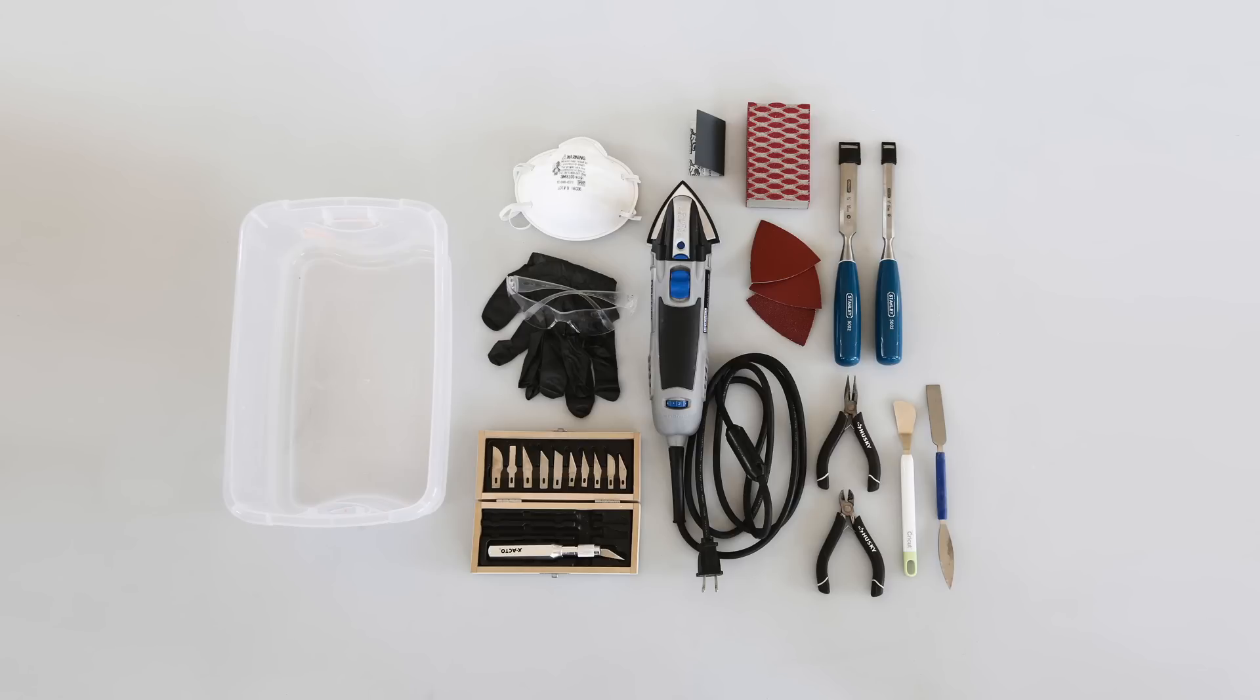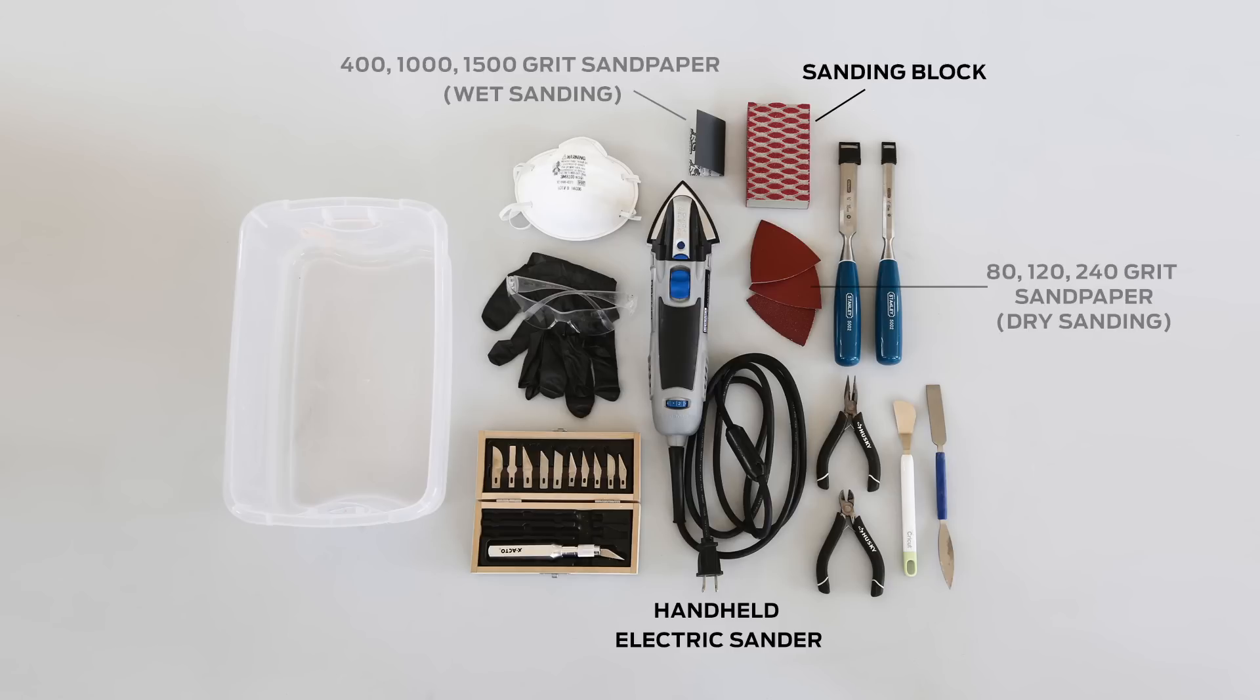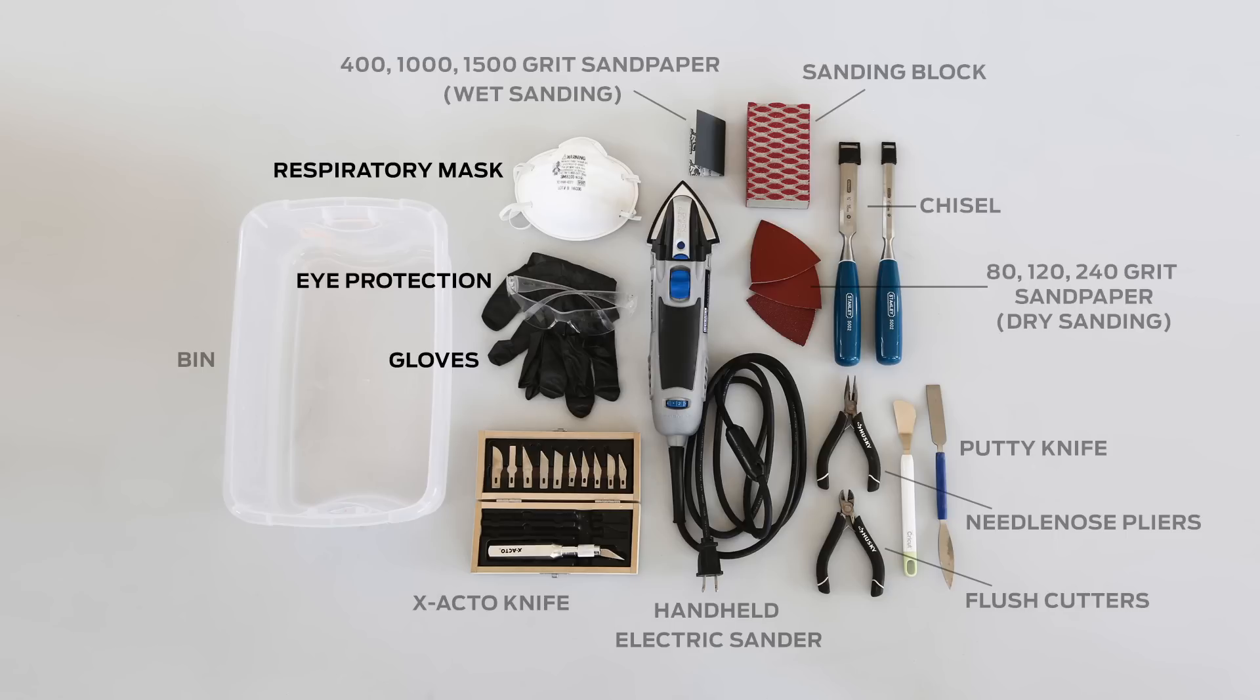In order to use these sanding techniques to completely smooth your model, you'll need the following supplies: 80, 120, and 240 grit sandpaper for sanding; 400, 1000, and 1500 grit sandpaper for wet sanding; handheld electric sander or sanding block; exacto knife or putty knife; needle nose pliers or flush cutters; a bin to hold water; a respiratory mask; eye protection; and gloves.